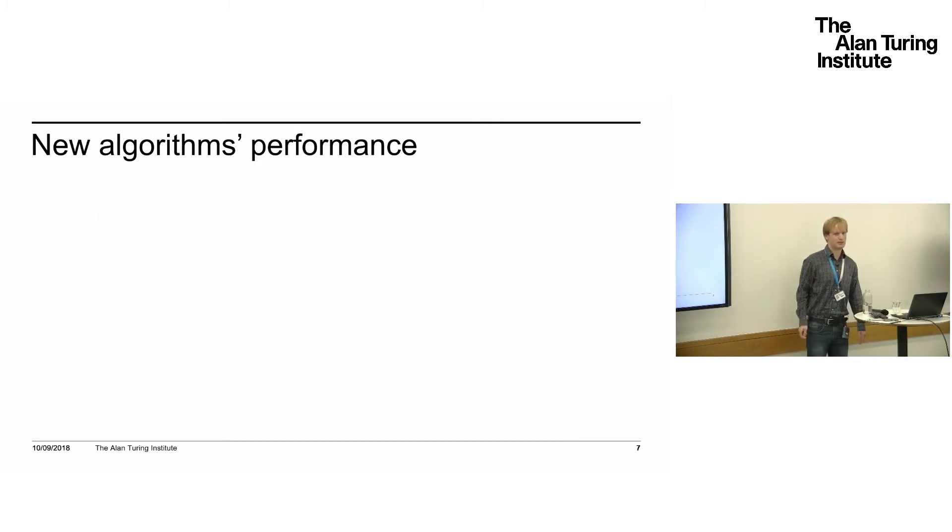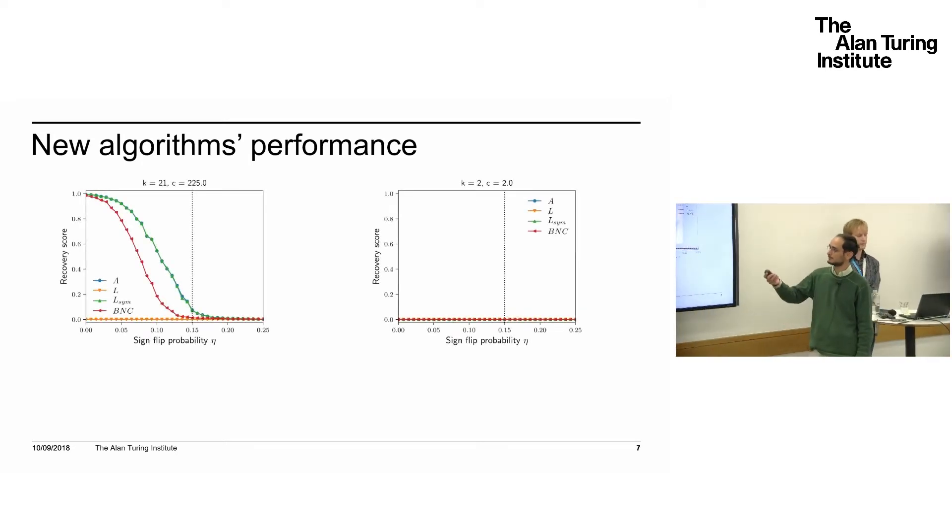Going back to the scenarios with many communities or very sparse graphs, we see that H, the Bethe Hessian, doesn't improve in the case of many communities because it's based on the Laplacian—it's just a deformed Laplacian—so we don't expect it to overcome the theoretical threshold for the Laplacian and adjacency. But on the other side, the generalized eigenvalue formulation does a lot better. It overcomes the threshold and improves even more if you use the post-processing, the iterative post-processing on the results generated by the GE.